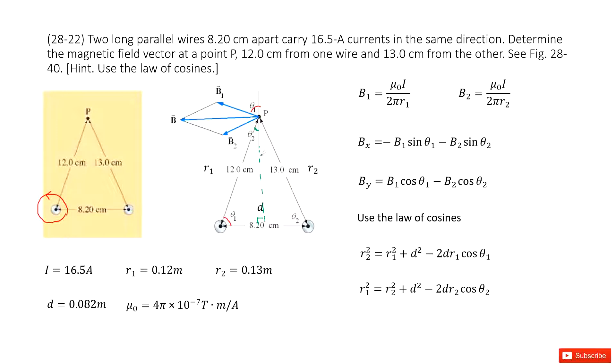And also we look at this line, theta 1 plus this red one plus this green one equal to 90 degrees. Because this angle, B1 with R1 is 90 degrees. Right? Yes, so we determined this is theta 1.